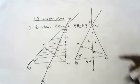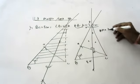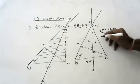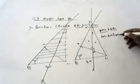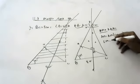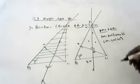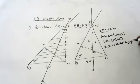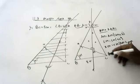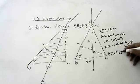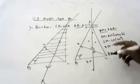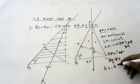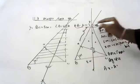These both triangles AMX and AMC are congruent. AM is equal to AM — common side. Angle M is equal to angle M — 90 degrees. XM is equal to CM because AM is a perpendicular bisector. So by SAS, triangle AMX is congruent to triangle AMC. By CPCT, AF is equal to AC.